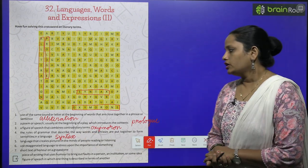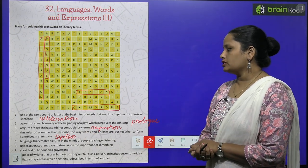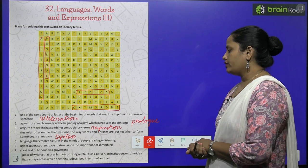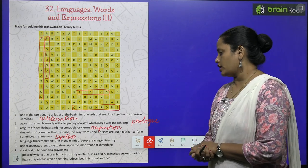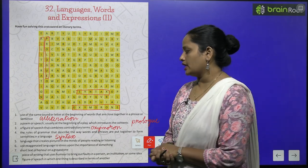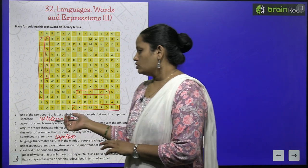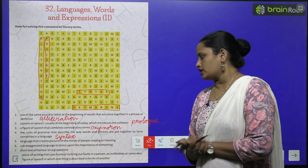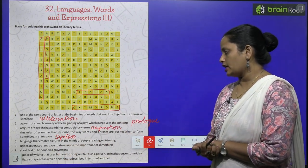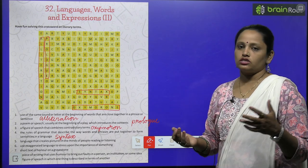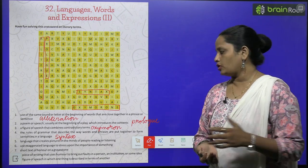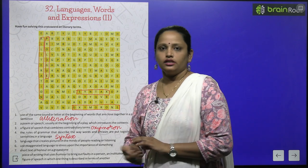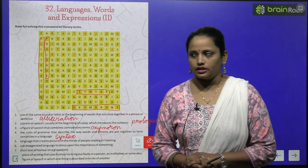The fourth one is the rules of grammar that describe the way words and phrases are put together to form sentences in a language. The grammar rule that tells us how sentences are formed and which words to put together — this is called syntax. And here we have marked it.